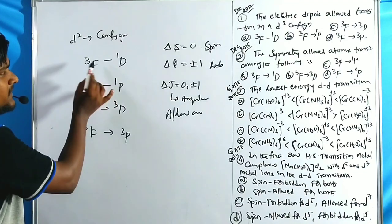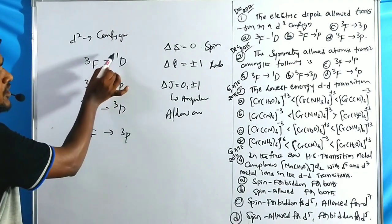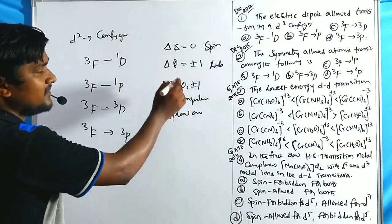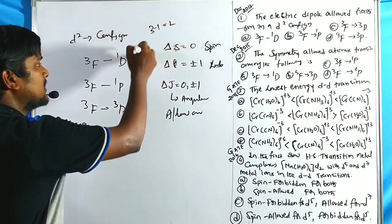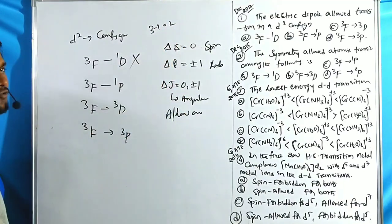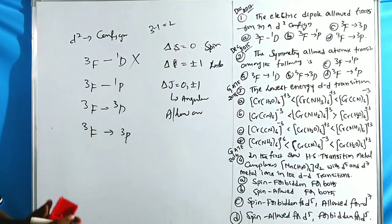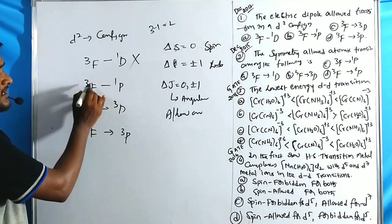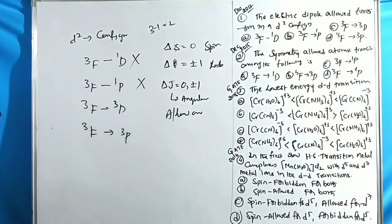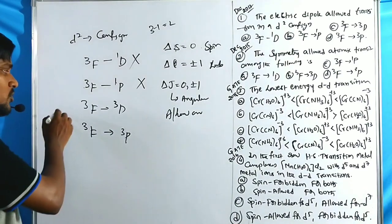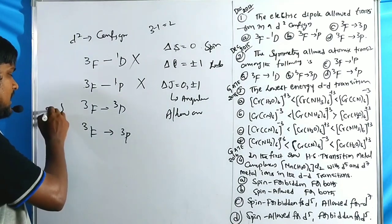For the first option, spin multiplicity changes from 3 to 1, so ΔS = 3 − 1 = 2, which is not zero — this is spin forbidden. The second option, ¹P → ³F, is also spin forbidden. The remaining two options are both spin allowed.